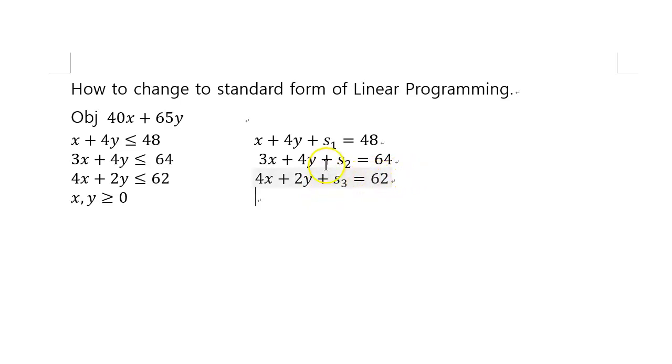Once you have introduced these slack variables, you have to make sure that your objective function is now represented in the new s1, s2, s3 also. So, you write down 40x plus 65y, but then plus 0 times s1 plus 0 times s2 plus 0 times s3. Just put 0s for all the slack variables you introduced.